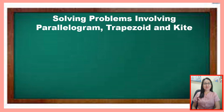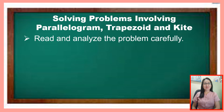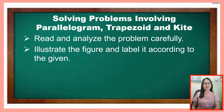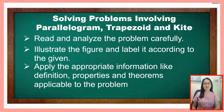Before we start, let me remind you some important tips in solving problems on quadrilaterals like the parallelogram, trapezoid, and kite. First and very important: read and analyze the problem carefully. Your correctness or accuracy of the result depends upon your ability to understand the problem. Then, as much as possible, illustrate the figure and label it according to the given — this will help you visualize the problem. Then apply the appropriate information discussed in my previous videos, like the definitions, properties, and theorems applicable to the problem.